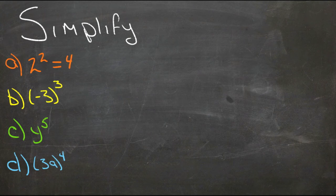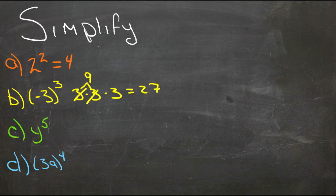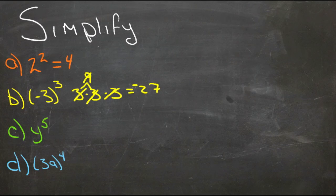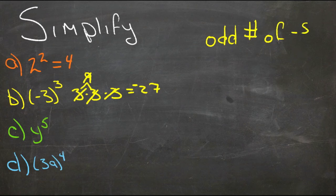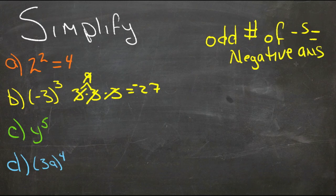For negative 3 to the third power, this is negative 3 times itself three times. First we do 3 times 3 times 3: 3 times 3 is 9, and 9 times 3 is 27. Then we look at the sign: since it's negative and was multiplied an odd number of times, the answer is negative. An odd number of negatives gives a negative answer, and an even number of negatives gives a positive answer.